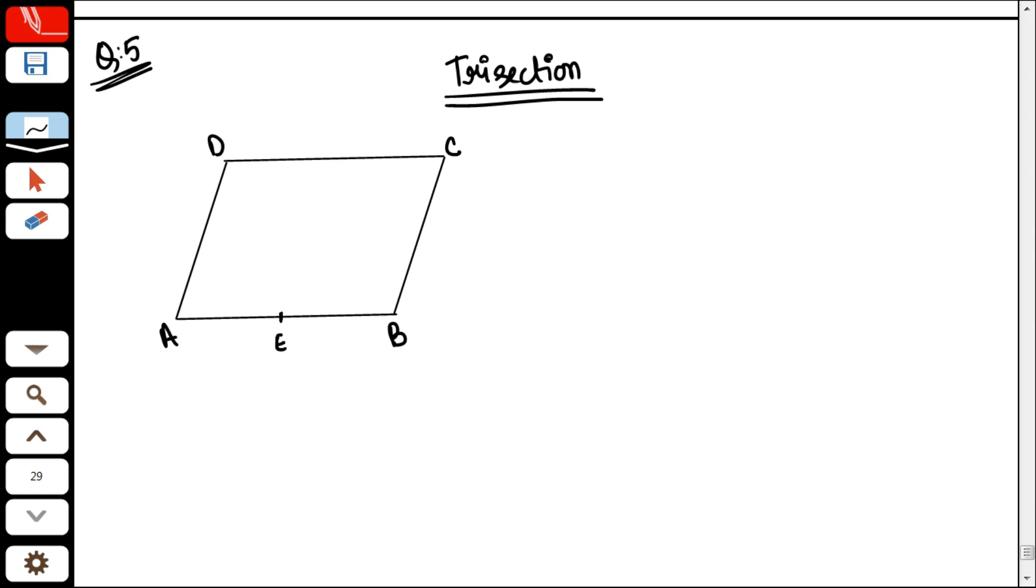What is the midpoint of AB? E. What is the midpoint of CD? F. E and F are both midpoints. There's a parallelogram ABCD. In it, the midpoint of AB is E, and the midpoint of CD is F.